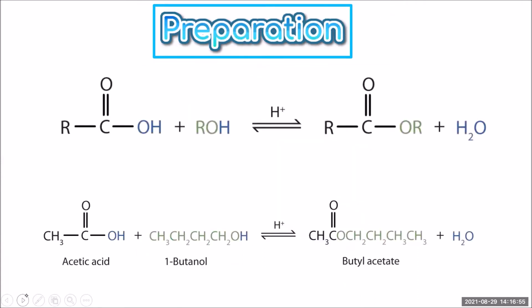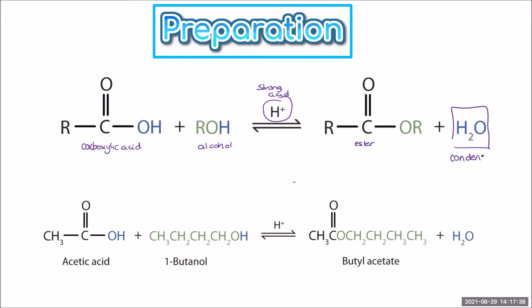We've seen the preparation of esters already in our reactions of alcohols video on esterification, but let's just run through it one more time. So we have a carboxylic acid and an alcohol. We need a strong acid catalyst, and we produce our ester and water. When we produce water in a reaction, this is what we call a condensation reaction. So esterification is a condensation reaction.